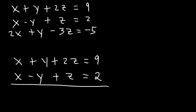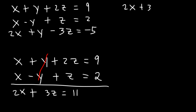The y variables will cancel. x plus x is 2x. 2z plus z is 3z. 9 plus 2 is 11. So we get 2x plus 3z equals 11. Let's save this equation — we're going to use it later.